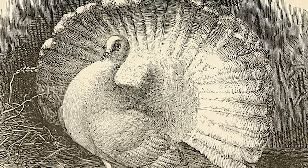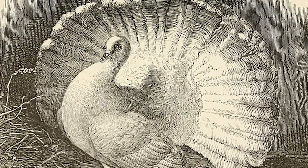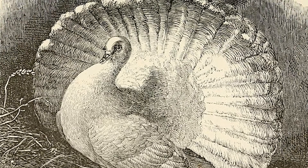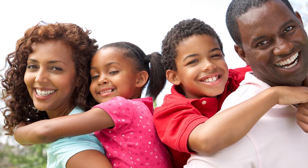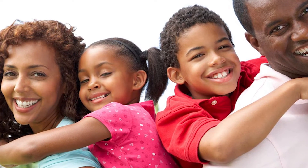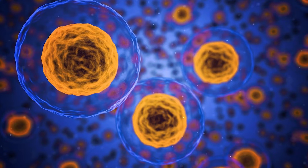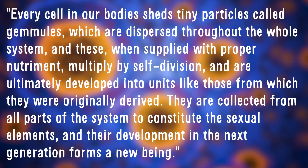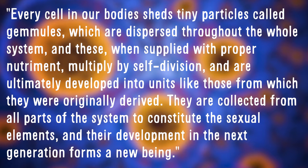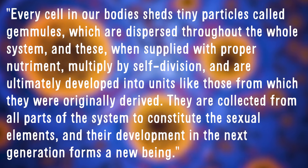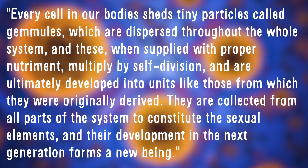Natural selection was among Darwin's best evidence for evolution, but there were holes in it, and Darwin did not know how it exactly worked. Offspring had a mix of their parents' features that were clearly passed on to the next generation, but how it all exactly occurred was a mystery. This is where pangenesis came into play: every cell in our body sheds tiny particles called gemmules, which are dispersed throughout the whole system, and these, when supplied with proper nutriment, multiply by self-division, and are ultimately developed into units like those from which they were originally derived. They are collected from all parts of the system to constitute the sexual elements, and their development in the next generation forms a new being.